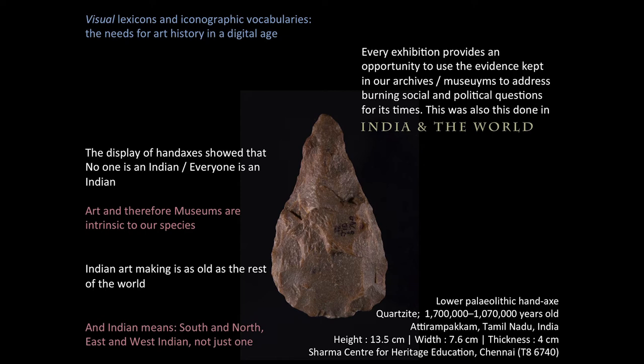We used the Atiranpakkam hand axes to pose the question that no one is originally Indian — we're all out of Africa. We begin by saying: anyone fighting for the rights and tradition of India should remember your ancestors came here from somewhere; nobody was ever here to begin with. Everyone's a migrant and therefore everyone's an Indian. Then you move the narrative forward. The film's script — you hear J.D. Hill speaking, saying this is an aesthetic object. As curators doing our speeches, we had ninety to a hundred and twenty seconds to speak. The making of art is intrinsic to our species — so is the institution which houses art not going to be intrinsic to our species? Is a museum going to be so antithetical to the people of India?